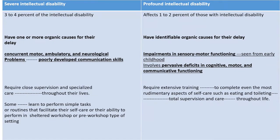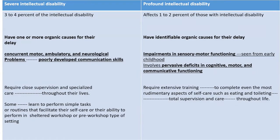In severe intellectual disability, there are concurrent motor and neurological problems and poorly developed communication skills. In profound ID, there are impairments in sensory-motor functioning evident from childhood and pervasive deficits in cognitive, motor, and communication functioning. Individuals with severe ID require very close supervision and specialized care throughout their lives, with some able to learn simple tasks in sheltered work settings. In profound ID, even basic self-care like eating and toileting requires extensive training and total supervision throughout life.